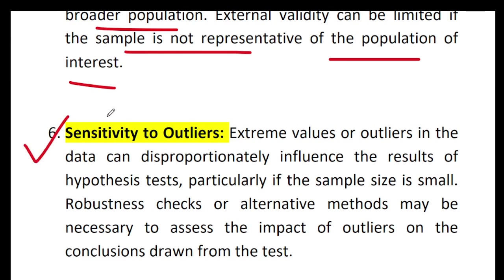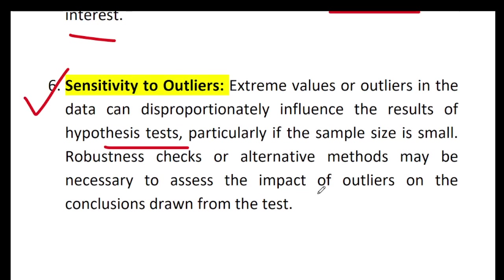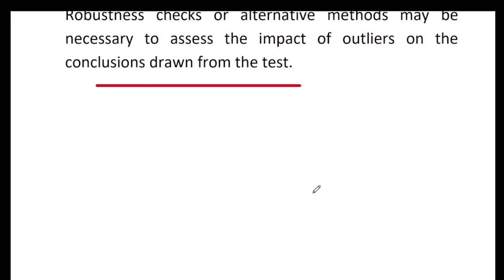The next limitation is sensitivity to outliers. Extreme values or outliers in the data can disproportionately influence the results of hypothesis tests, particularly if the sample size is small. Robustness checks or alternative methods may be necessary to assess the impact of outliers on the conclusions drawn from the test.